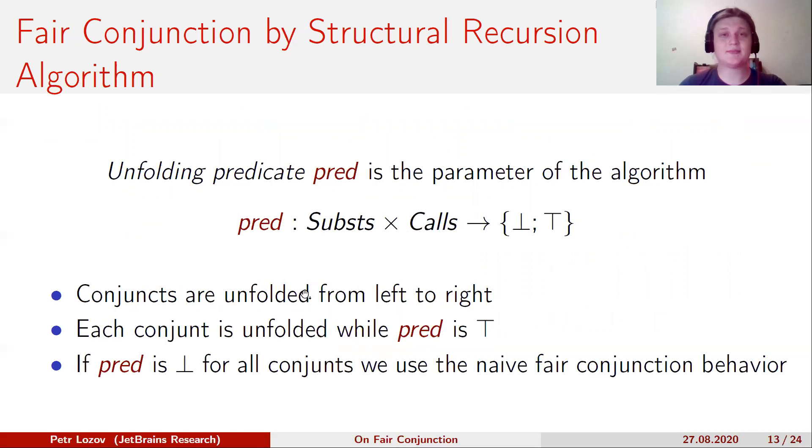As a result, the algorithm is as follows. Conjuncts are unfolded from left to right. Each conjunct is unfolded while the predicate is true. However, the case is possible when the predicate is false for all conjuncts. In this case, we will use the naive fair conjunction behavior.